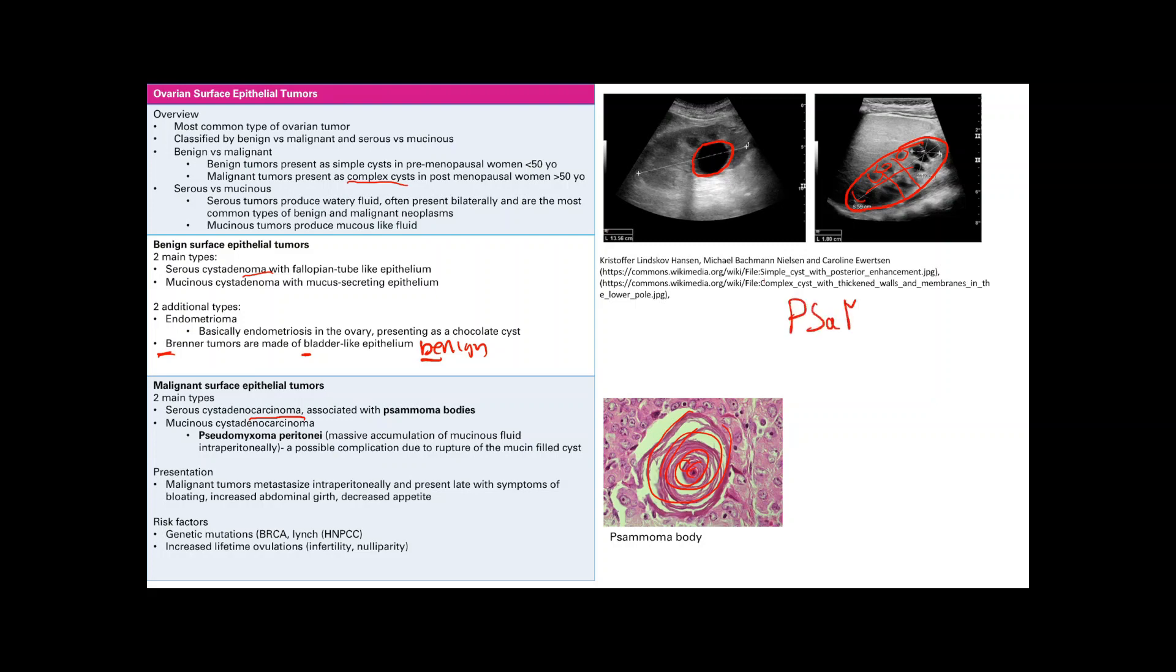There's multiple cancers that can cause psammoma bodies, and I have a little mnemonic that I like to use to remember which ones. Number one is papillary carcinoma of the thyroid, and then number two is serous cystadenocarcinoma of the ovary.